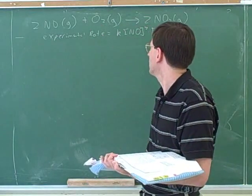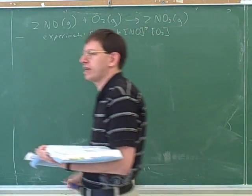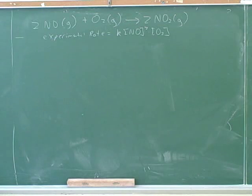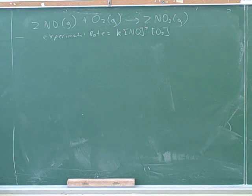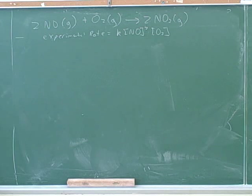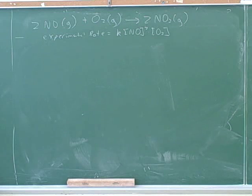Here's a reaction. Here's the experimental rate law. We want to figure out what the mechanism is. The logical thing to start with is to ask whether this is an elementary reaction. How can we tell if this is an elementary reaction? Because we have the 2 in the — I know, 2 squared — and the experimental rate matches. So does it seem like it could be an elementary reaction? Yes.